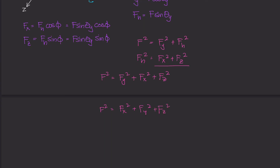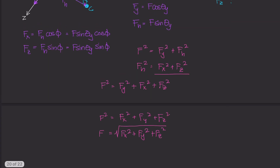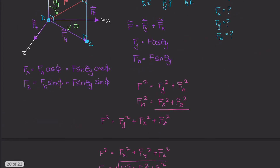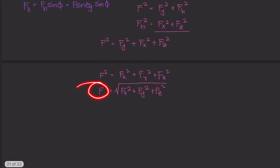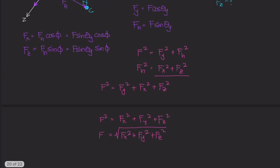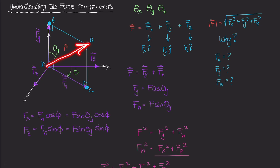Taking the square root of both sides gives us the magnitude of F: F equals the square root of F of X squared plus F of Y squared plus F of Z squared. That is how we derive this formula. I hope you enjoyed this derivation — hopefully this gives you a better understanding of 3D forces and makes them a little bit easier to work with.